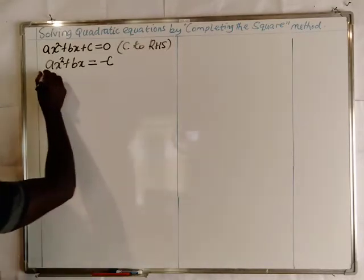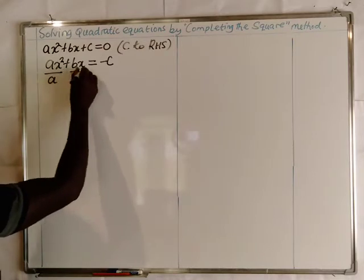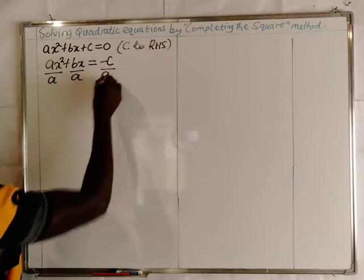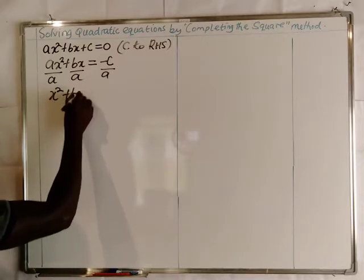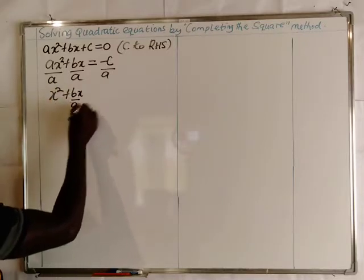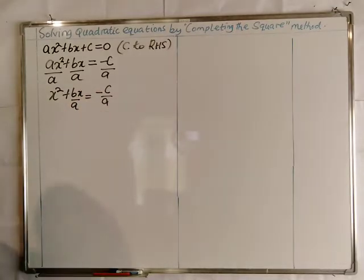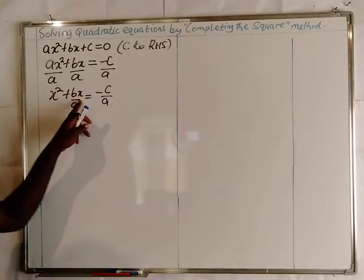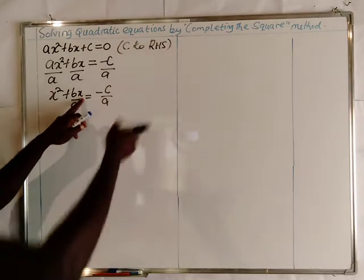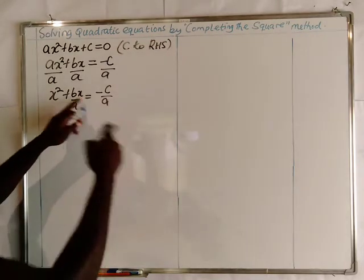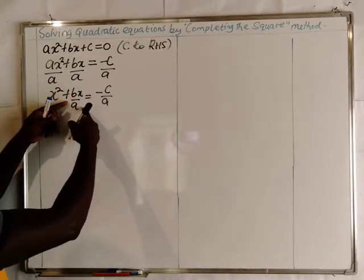Then we divide throughout by the coefficient of x squared, which is a, so that we get x squared plus bx over a equal to minus c over a. We then take half of the coefficient of x, which is b over a.